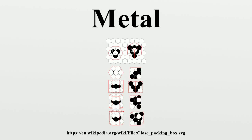Atoms of metals readily lose their outer shell electrons, resulting in a free-flowing cloud of electrons within their otherwise solid arrangement. This provides the ability of metallic substances to easily transmit heat and electricity. While this flow of electrons occurs, the solid characteristic of the metal is produced by electrostatic interactions between each atom and the electron cloud. This type of bond is called a metallic bond.